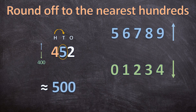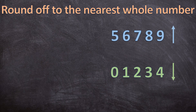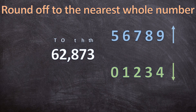Now let's move on to decimal numbers. For the first question we need to round off 62,873 to the nearest whole number. We look at the place values, and to round to the nearest whole number we look at the ones digit. So 62,873 is either going to round up to 63 or round down to 62. To determine which, we look at the digit in the place value to the right of the ones — in this case the 8 in the tenths place value. Since 8 is greater than 5, it rounds up.